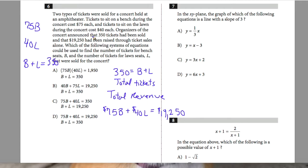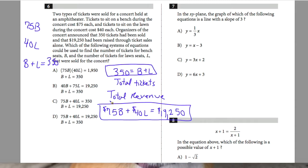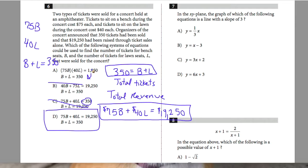The revenue equation is 75B plus 40L equals $19,250. Together these form the system of equations. Looking at the answer choices, I need 75B plus 40L equals 19,250 and B plus L equals 350. Answer A has incorrect values, some choices reverse quantities, but D has 75B plus 40L equals 19,250 and B plus L equals 350. So D is your best possible answer for question 6.